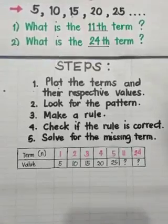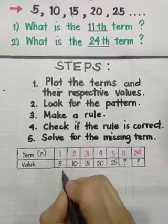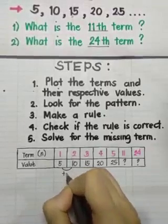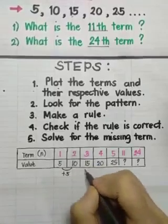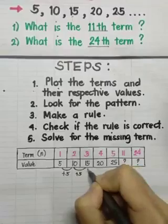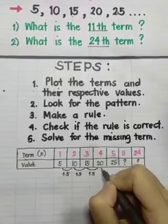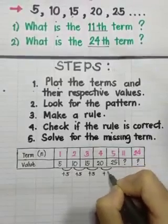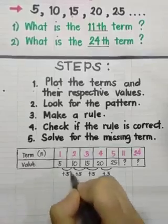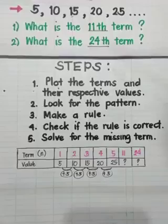Then let's go to step 2. Look for the pattern. Like I said a while ago, from the first to the second term, there is an increase of 5. Same with the second and the third. There is an increase of 5, and then third to the fourth, an increase of 5. Four to the fifth, there is an increase of 5. So the pattern will be by 5, the increase.